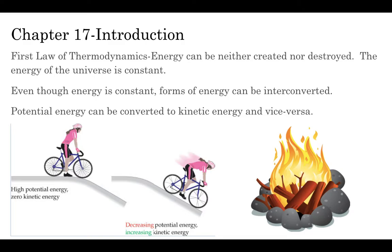If they're on top of the hill, they have high potential energy but no kinetic energy until they push off. Then potential energy decreases while kinetic energy increases as they speed down the hill. The campfire shows that the chemical energy of the wood can be converted into heat and light — kinetic energy of the molecules can come from the potential energy of the bonds in the wood. So there are ways energy can interconvert. In this chapter we're looking not just at how much energy converts, but how the importance of those energy changes determines whether or not certain processes occur.